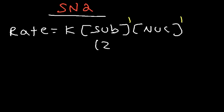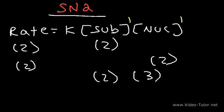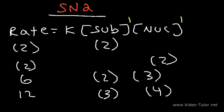If you double the concentration of the substrate, the rate will double. If you double the concentration of the nucleophile, the rate will double. If you triple the concentration of the substrate, the rate triples. If you quadruple the concentration of the nucleophile, the rate will quadruple. If you double the concentration of the substrate and triple the concentration of the nucleophile, the rate increases by a factor of 6. If you triple the substrate and quadruple the nucleophile, the rate increases by a factor of 12.